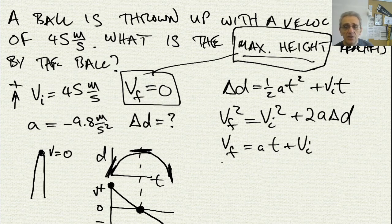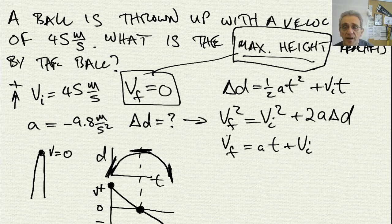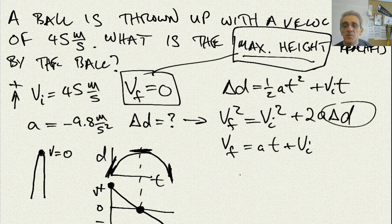I don't have time provided in this question. The only equation that doesn't have time is the second one. Let me check how many unknowns I have: I know my v final — that's zero; my initial velocity is 45; and my acceleration is negative 9.8. Therefore, the only unknown value in this equation is delta D. Unlike younger students, I will not attempt to plug values in at this point.